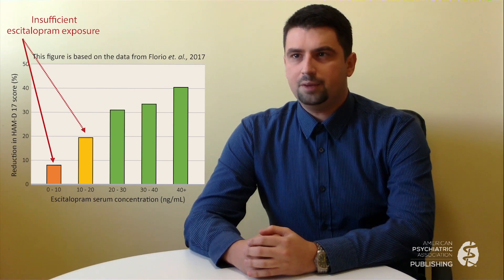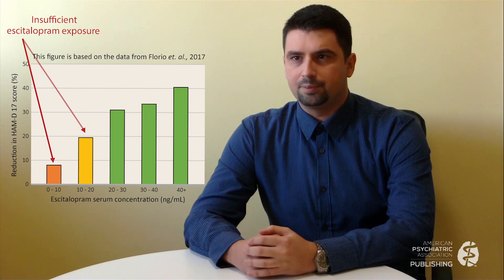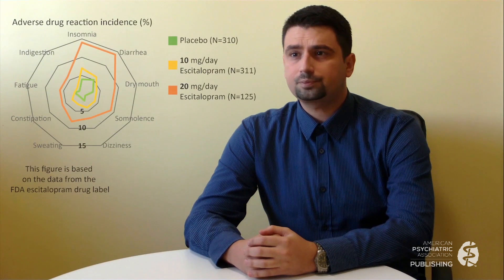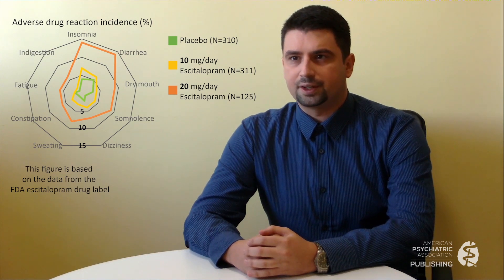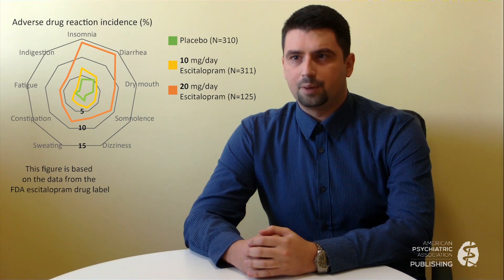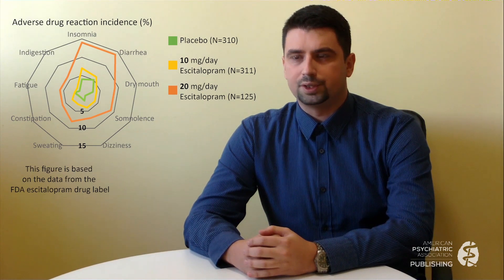The FDA-approved drug label for escitalopram recommends a daily dose of 10 mg and defines the maximum daily dose of 20 mg. However, increasing the dose from 10 to 20 mg per day significantly increases the risk of side effects. Consequently, being able to predict escitalopram exposure for an individual patient would help in making the decision whether or not to increase the dose.